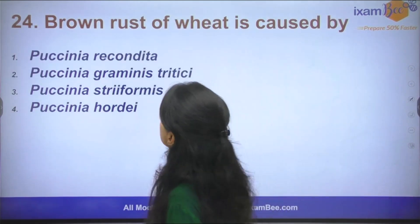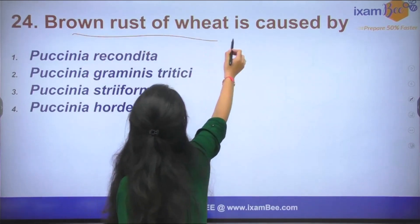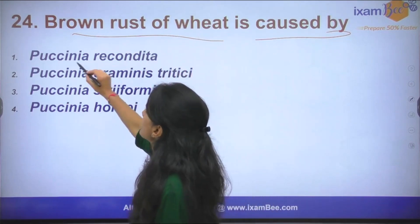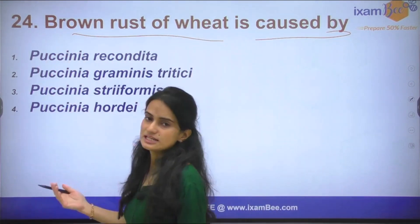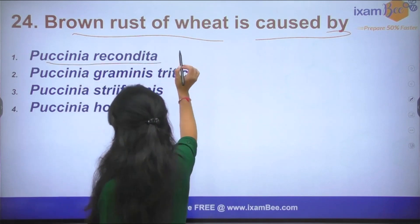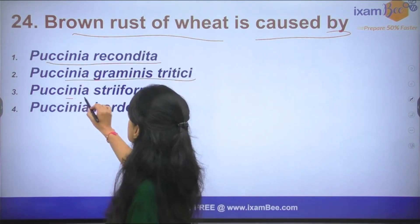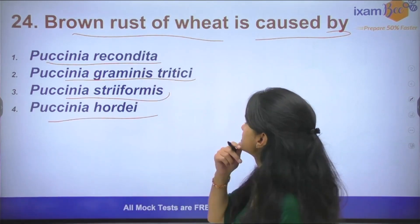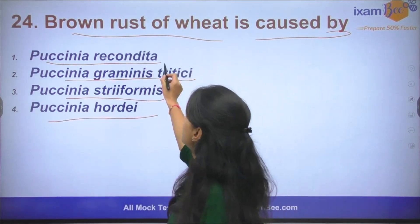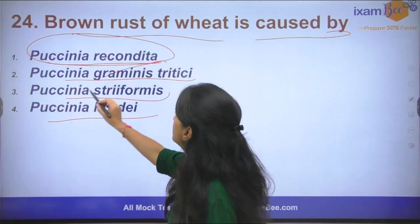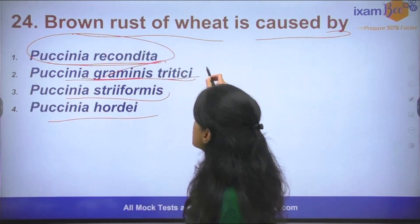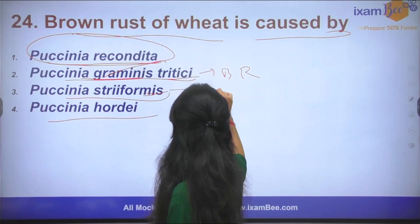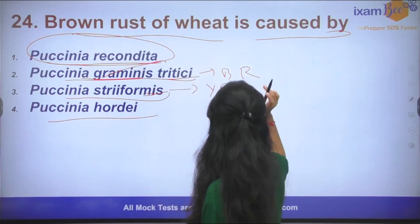Question number 24: Brown rust of wheat is caused by which organism? Black rust is caused by Puccinia graminis, and yellow rust is caused by Puccinia striiformis.